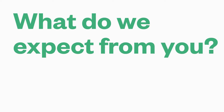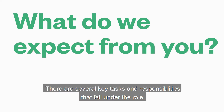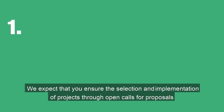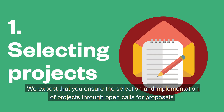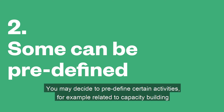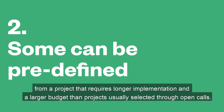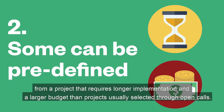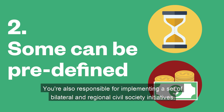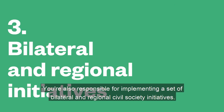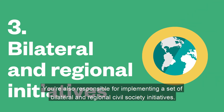What do we then expect from you as a fund operator? There are several key tasks and responsibilities that fall under the role. First of all, we expect that you ensure the selection and implementation of a number of projects through open calls for proposals. You may decide to predefine certain activities — for example, related to capacity building or any other large-scale strategic area — in which you believe the civil society sector would benefit from a project that requires longer implementation and a larger budget than projects usually selected through open calls. You are also responsible for implementing a set of bilateral and regional civil society initiatives.